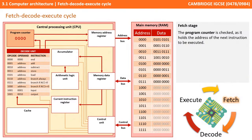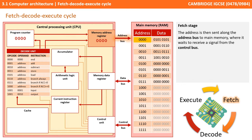Starting with the fetch stage: the very first thing that happens is the program counter is checked, as it holds the address of the next instruction to be executed. The address stored is then copied into the memory address register. The address is then sent along the address bus to main memory, where it waits to receive a signal from the control bus so it knows what to do.